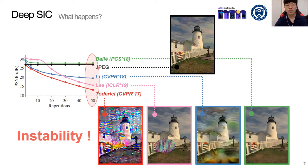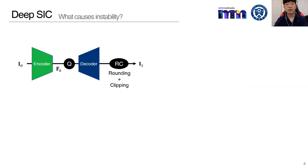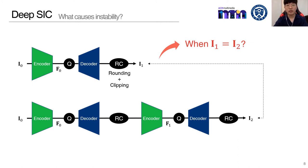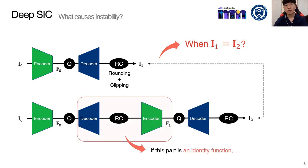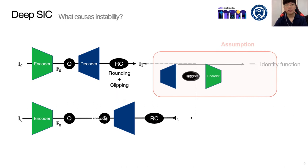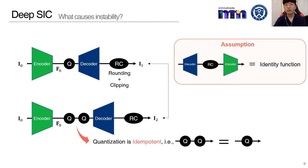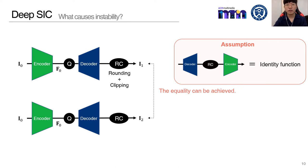This shows the single-step compression, where RC denotes the rounding and clipping operation for image reconstruction. This is successive image compression with two repetitions. In order to investigate the causes of the instability, we analyze this condition. Let's assume a situation where this part is an identity function. The assumption makes the following simplification, and because of idempotence of quantization, it can be further reduced. As a result, this equality can be achieved.